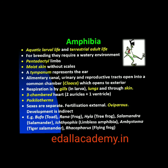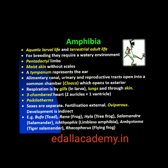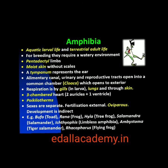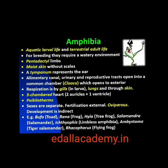The heart is three-chambered — two auricles and one ventricle. These are cold-blooded animals. Sexes are separate. Fertilization is external. They are oviparous and development is indirect. Examples: Bufo (toad), Rana (frog), Hyla (tree frog), Salamandra (salamander), Ichthyophis (limbless amphibia).